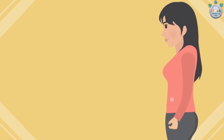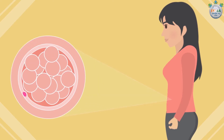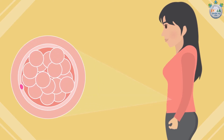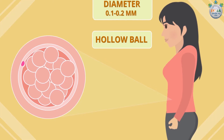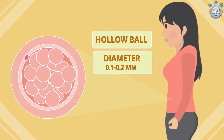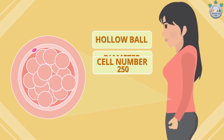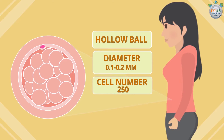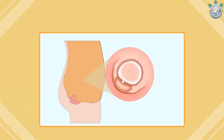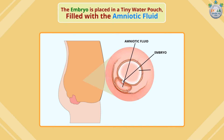At three weeks pregnant, the size of your fetus will resemble a hollow ball with a diameter of 0.1 to 0.2 millimeters. The cell number will increase to 250, and the embryo is placed in a tiny water pouch.